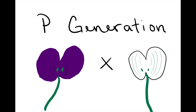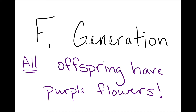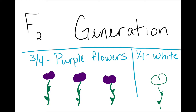Mendel crossed purebred pea plants that had different forms of a trait. For example, a purple-flowered plant would be crossed with a white-flowered plant. This first cross is known as the P, or parent, generation. The offspring of the P generation are called the F1 generation. Mendel observed that all of the plants in the F1 generation had only one form of the trait. In this example, all of the offspring had purple flowers, which is called the dominant trait. The white flower trait is lost in this generation, and this is called the recessive trait.